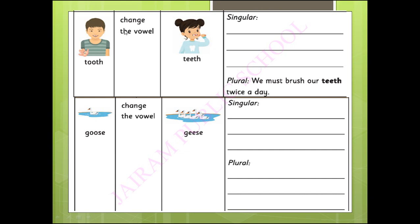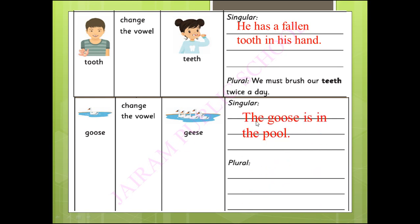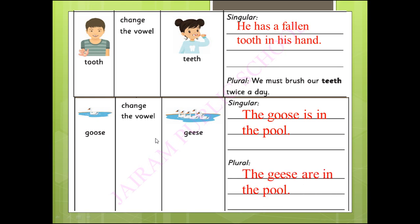Tooth — here the vowels are changing. T-O-O-T-H, tooth; plural: T-E-E-T-H, teeth. Now create a sentence: 'He has a fallen tooth in his hand.' Plural: 'We must brush our teeth twice a day.' Now goose — changing the vowel to geese. Sentence: 'The goose is in the pool' or 'The goose is swimming in the pool.' Plural: 'The geese are in the pool — you can see so many are there.'